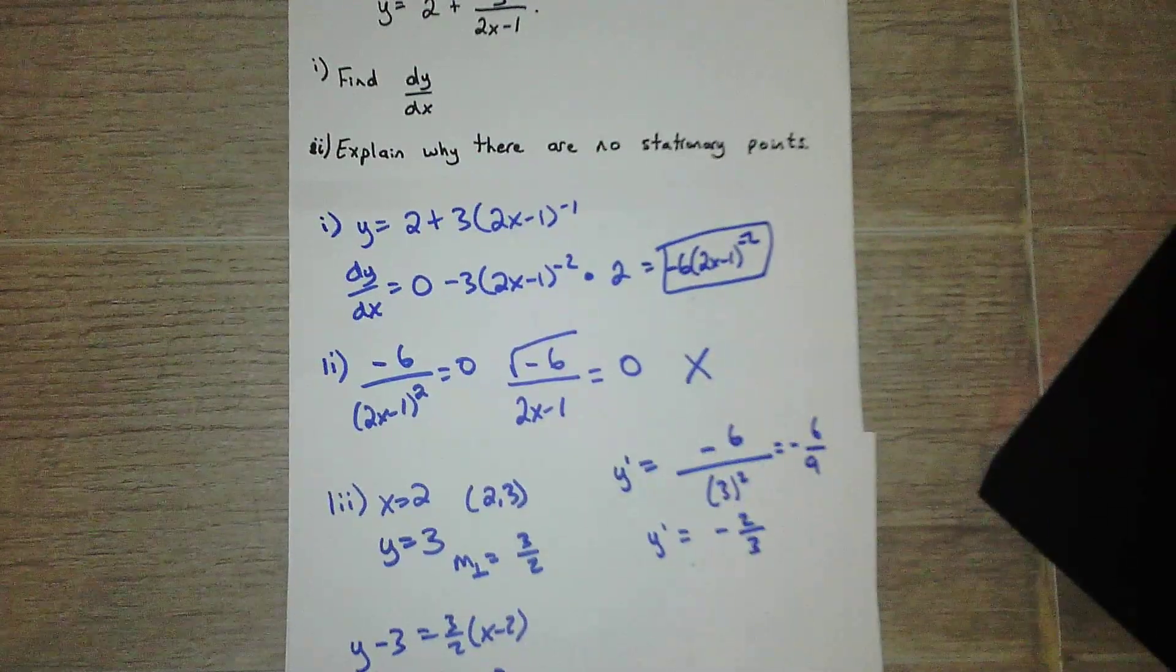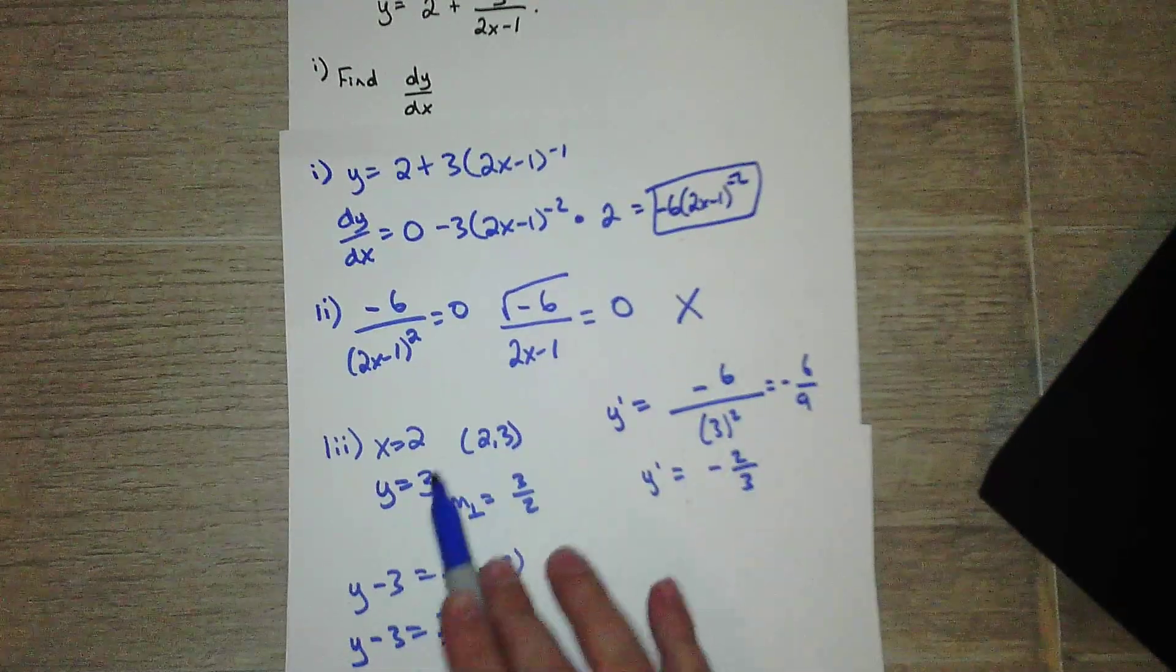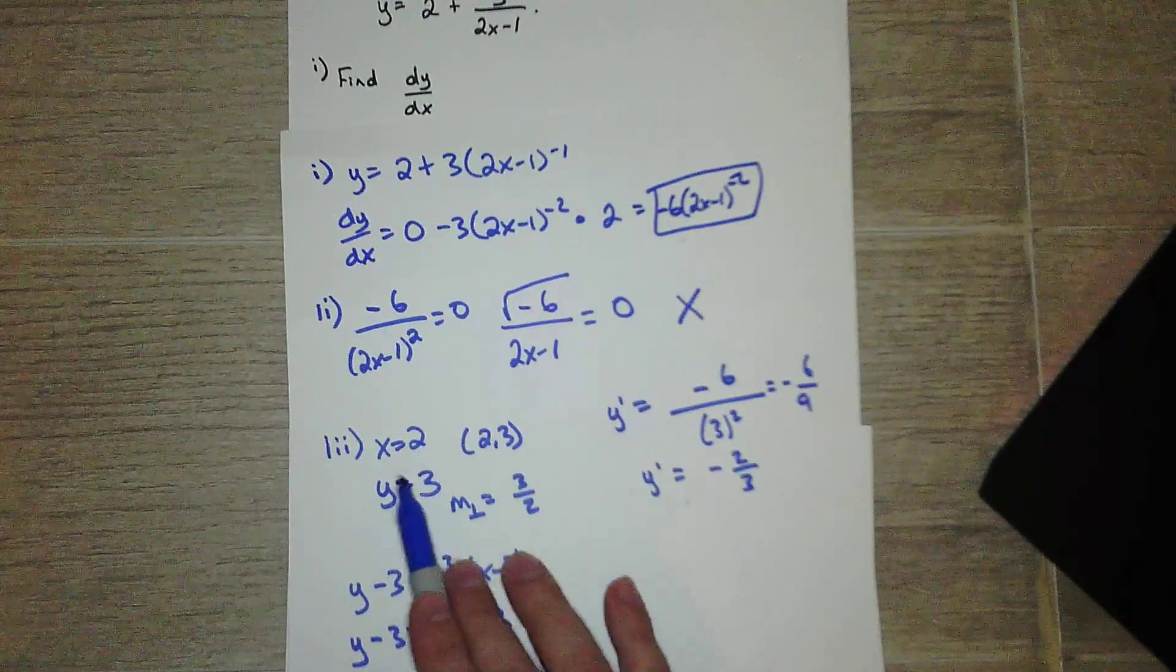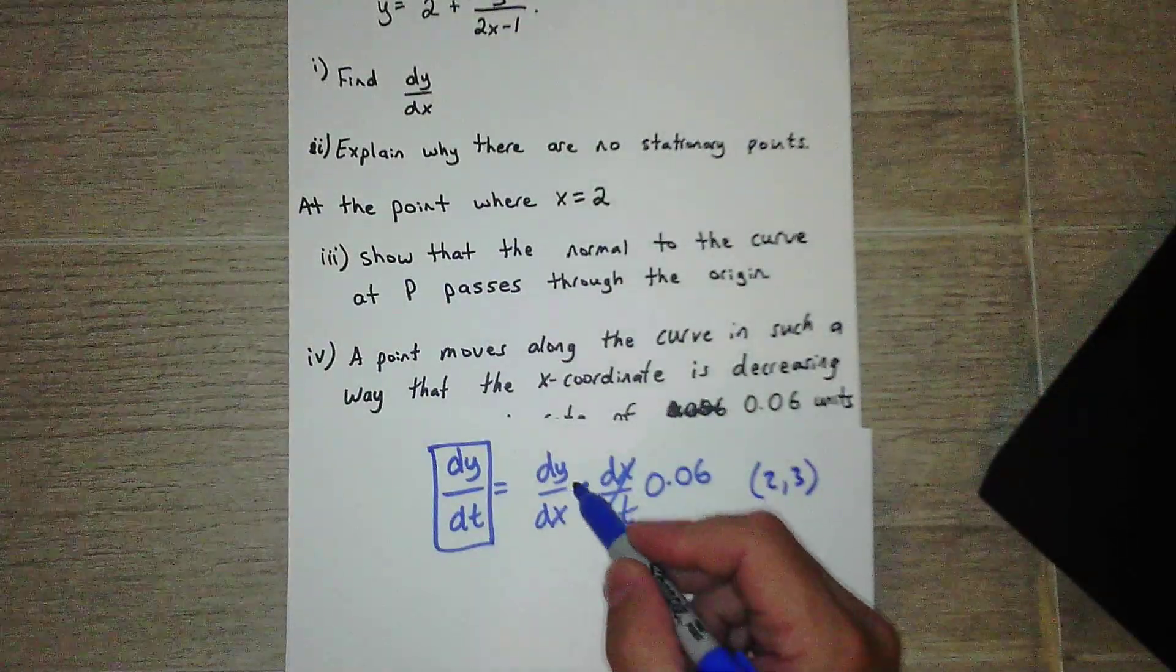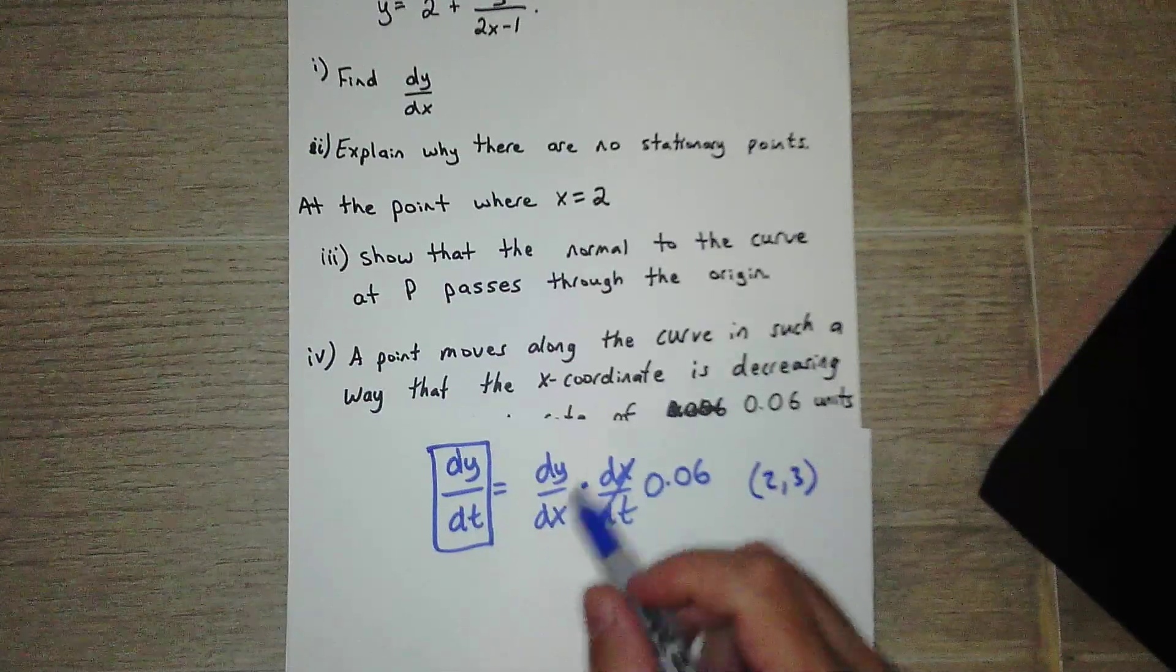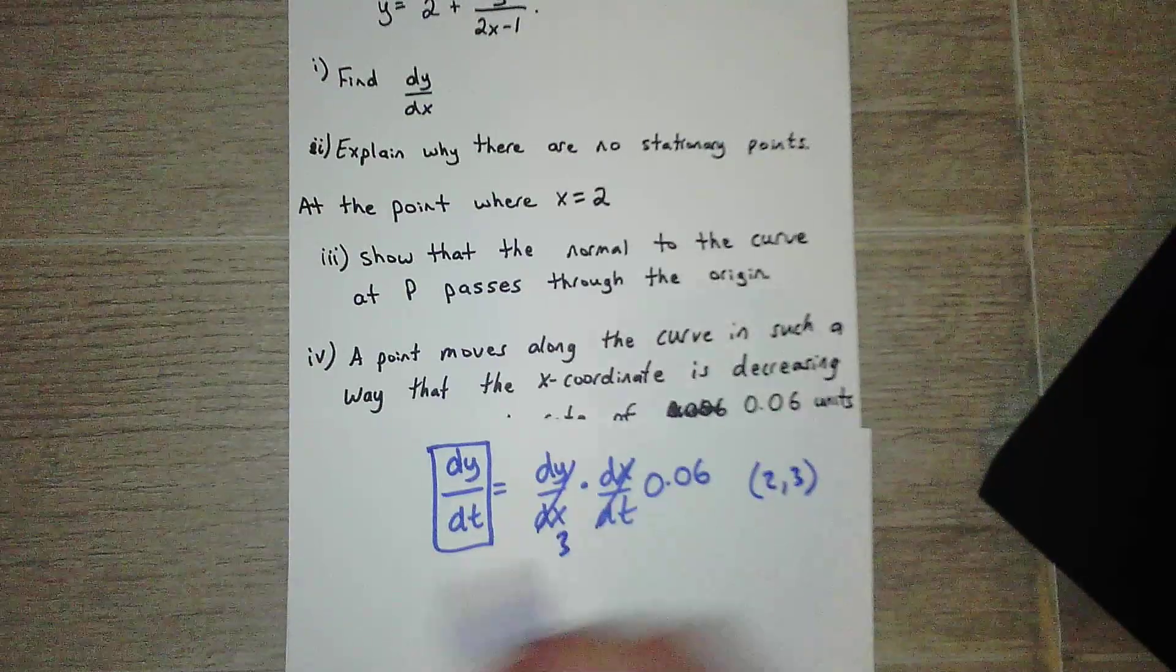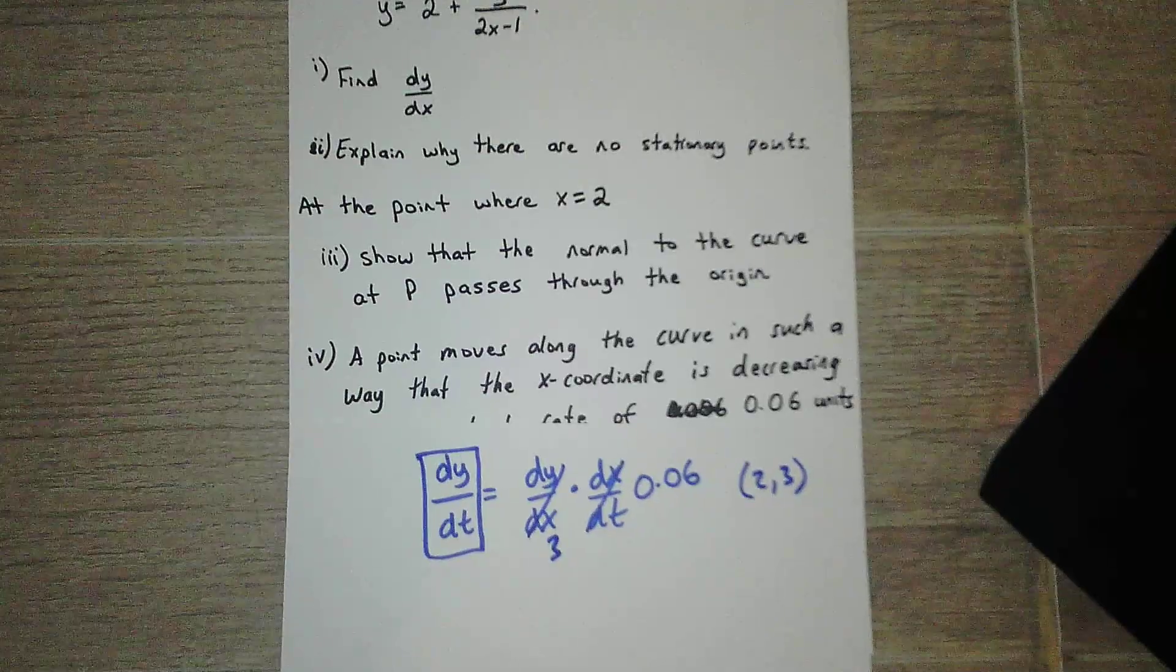So dy/dx was this here. Okay, then when we plugged in the value for x, we got this value of negative two thirds. So dy/dx when x is equal to 2 is just negative two thirds. So the derivative of y with respect to x, and then plug in a value for x, and we get negative two thirds. So basically all this work was already done for. That was the point of i and double i.